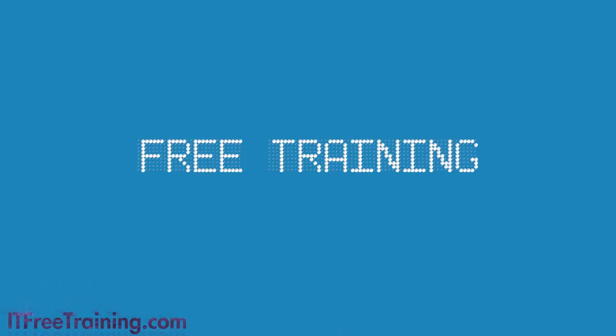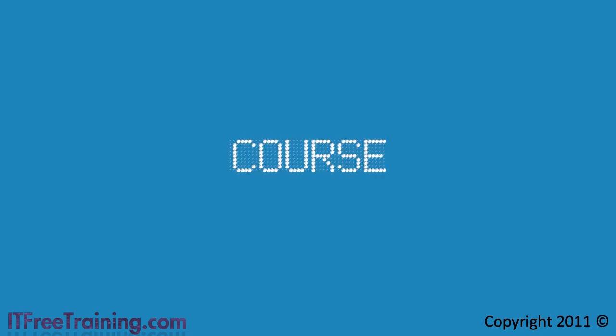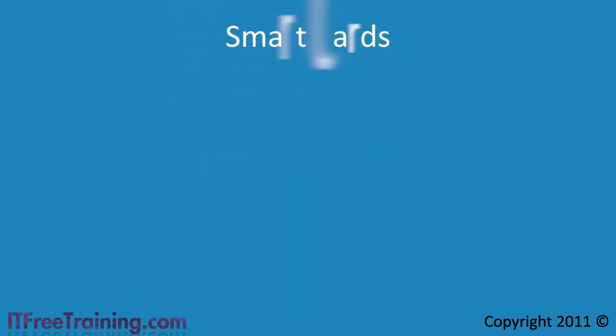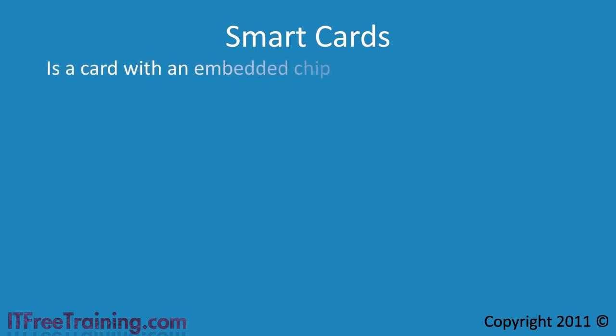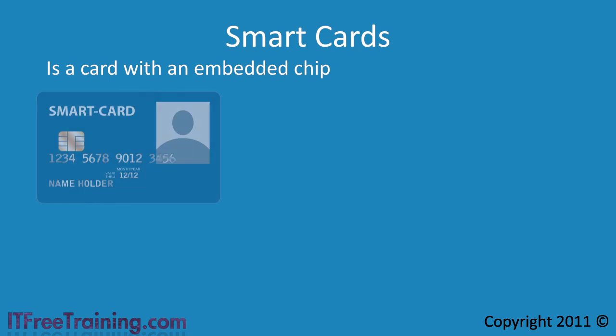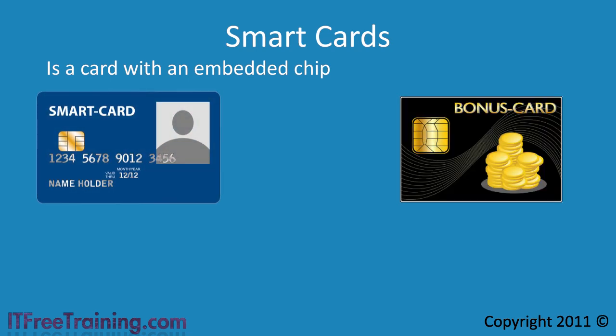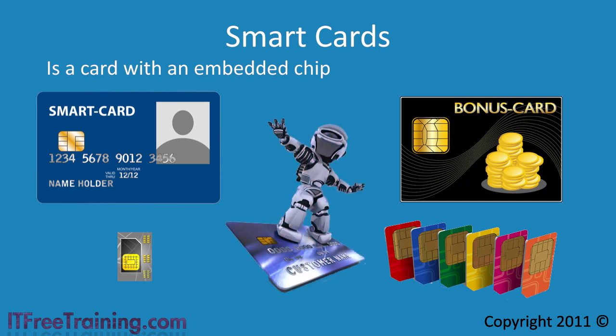Here is another free Windows 7 training video for the free 7680 training course. This video looks at smart cards. Smart cards are devices which have a chip embedded in the card. An example of a smart card is a credit card. Different types of smart cards exist on the market. For this video I will concentrate on smart cards used for authentication with Windows 7.